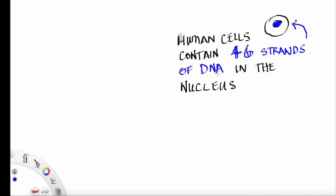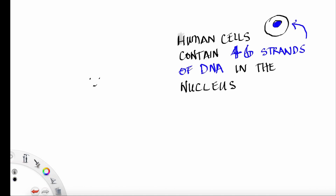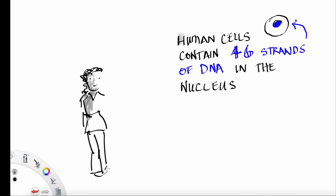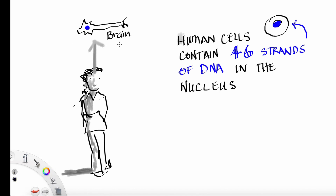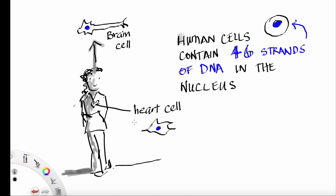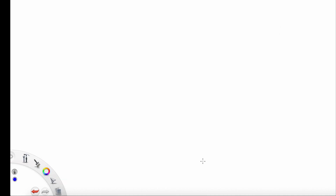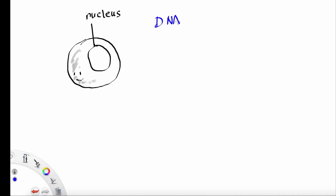Human cells contain 46 strands of DNA in the nucleus. This is in the nucleus of every cell in your body. This can include a brain cell, or a heart cell, or a big toe cell. Pretty much every cell in your body has 46 strands of DNA.